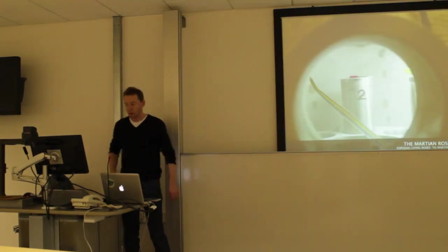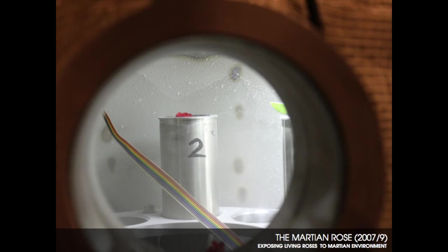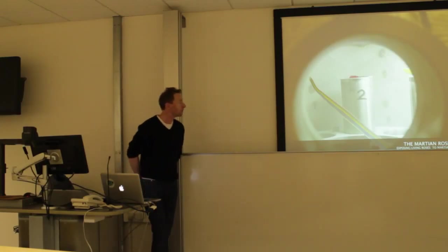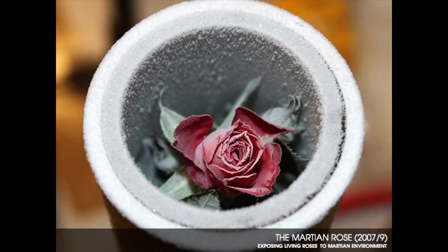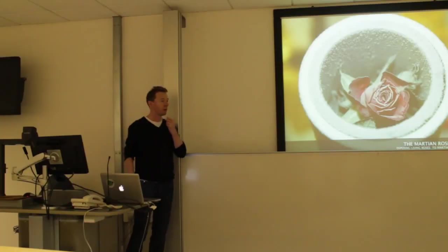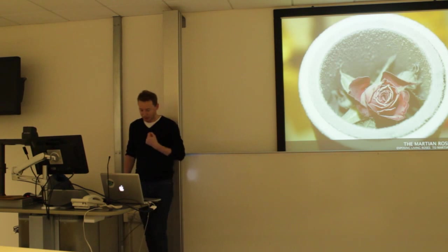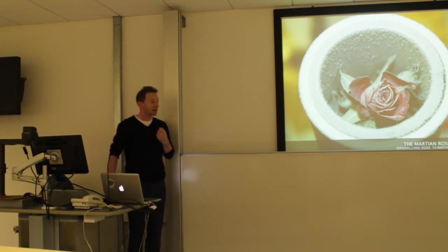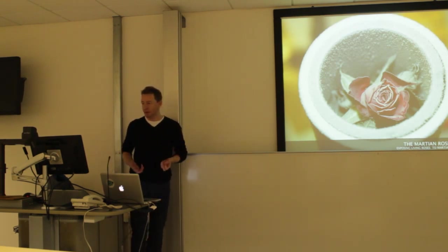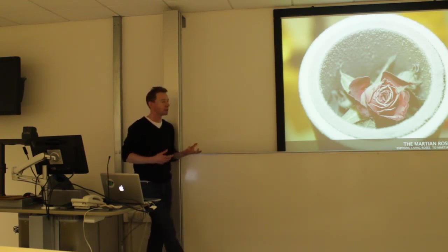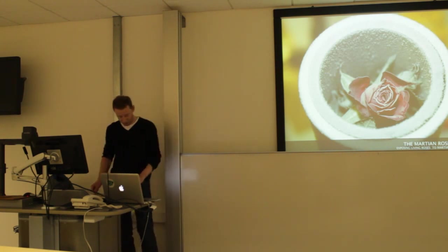A previous project we worked on was the Martian Rose, where we went to the planetary simulation chamber in Denmark and exposed a rose to Martian conditions. The conditions are very harsh, so the roses freeze and die, and when you hold them up they fall apart like a limp wire — a bit cartoonish. But it's quite important because we don't normally experience this environment, and it's a way of getting closer to what it means to be on Mars and see rovers driving around.